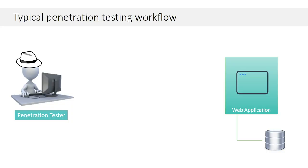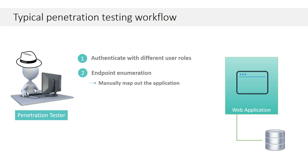Let's talk about the typical workflow for a penetration tester. You have a web application probably accessing some database with sensitive information. As a pen tester, the first step is to try and figure out how to authenticate — you need to know the different users and user roles associated with the application. Then you do endpoint enumeration: you'll manually map out the application, go to every link on the page, go through forms and multi-step processes like checkout flows, building up the site map so the tools can perform more thorough testing.